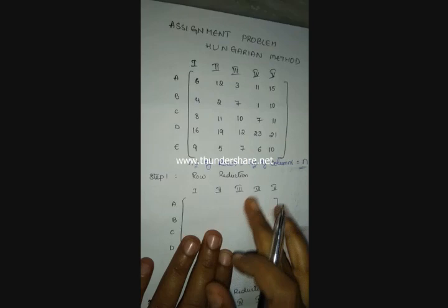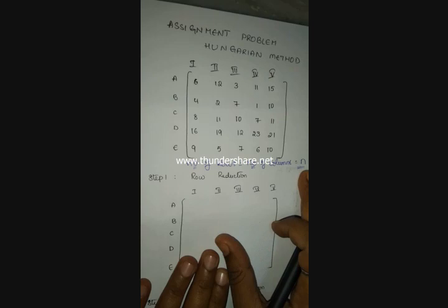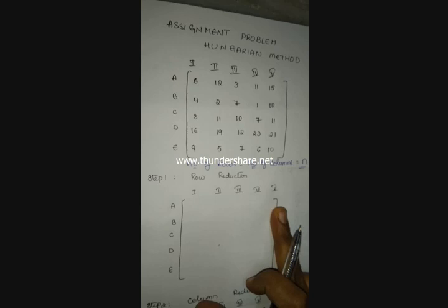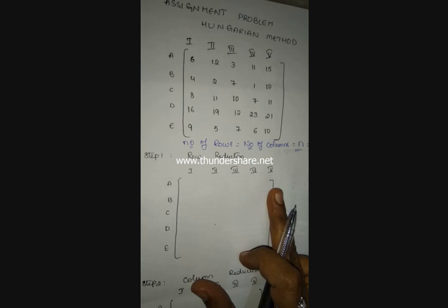This is one more example for the assignment problem using the Hungarian method. The number of rows equals the number of columns — a total of five rows and five columns — so this is a square matrix. In the case of a square matrix, we do not need to introduce a dummy row or column.